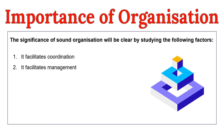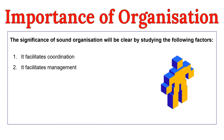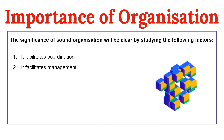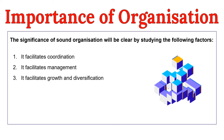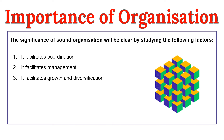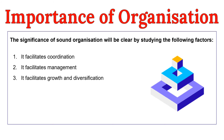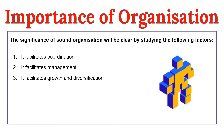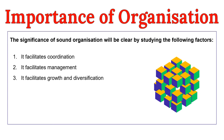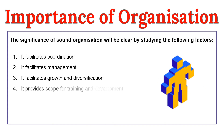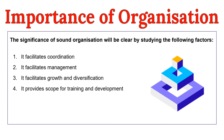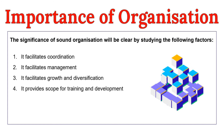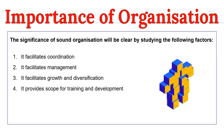The second point is that it facilitates management. The function of organizing is very much necessary for the performance of other functions of management like planning, staffing, directing, and controlling. The third point is that it facilitates growth and diversification. Sound organization helps in the growth and expansion of the enterprise by facilitating its efficient management, keeping various activities under control, and increasing the capacity of the enterprise to undertake more activities. The next point is that it provides scope for training and development. An effective organization facilitates delegation of authority, which is an important device for training and developing personnel and also an important means of directing subordinates.